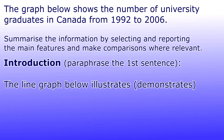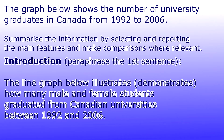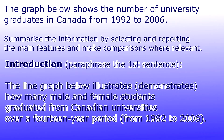So how can we paraphrase further? You can say: 'The graph below demonstrates how many Canadian male and female students graduated from Canadian universities between 1992 and 2006.' Or you can say 'graduated from Canadian universities over a 14-year period from 1992 to 2006.' This is a perfect introduction for your task.